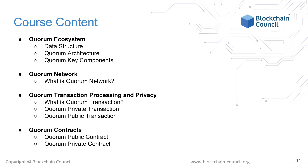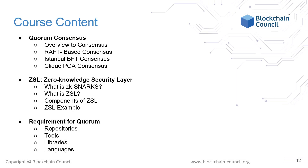Then we will see the Quorum network, public and private transactions, and Quorum contracts. We will then discuss Quorum consensus: RAFT, Istanbul BFT, and Qlik POA. Next, we will see what zero-knowledge security layer means, covering ZK SNARKs, ZSL components, and architecture.